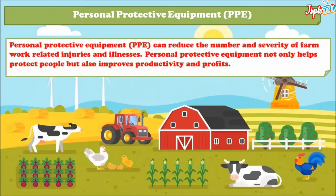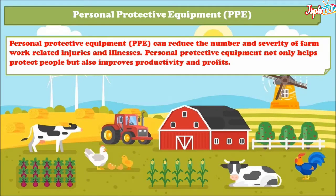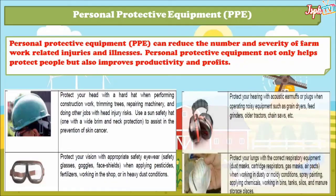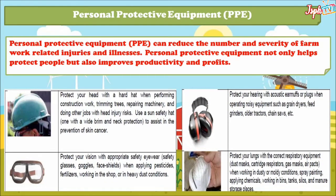For personal protective equipment — PPE can reduce the number and severity of farm work-related injuries and illnesses, and also helps improve productivity and profits. Protect your head with a hard hat when performing construction work, trimming trees, repairing machinery, and doing other jobs. Protect your vision with appropriate safety eyewear — safety glasses, goggles, or face shields — when applying pesticides, fertilizers, or working in the shop. Protect your hearing with acoustic earmuffs or plugs when operating noisy equipment such as grain dryers, feed grinders, older tractors, chainsaws, etc. Protect your lungs with the correct respiratory equipment like cartridge respirators, gas masks, or air packs.